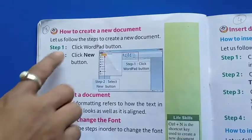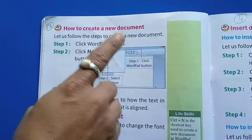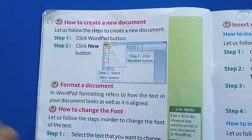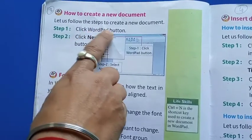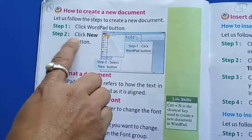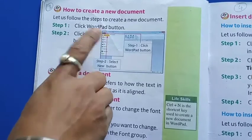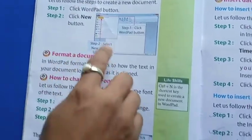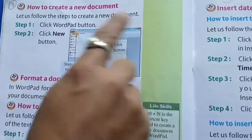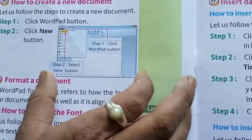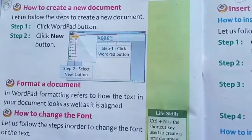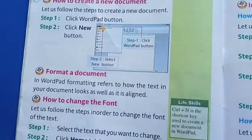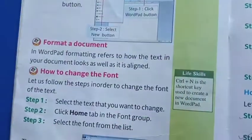How to create a new document? Step 1: click WordPad button. Step 2: click New button. If you have a computer, you will open it. This is practical, so I will just touch and leave it.